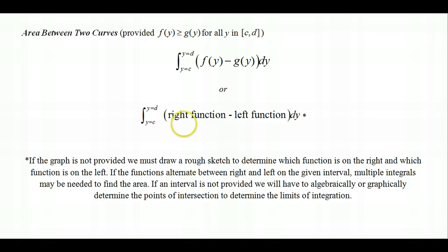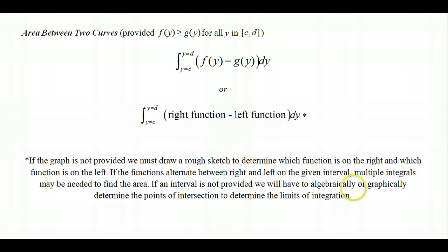We'll be seeing many functions that don't pass the vertical line test because they're functions of y, not functions of x. Just as in the previous lesson with respect to x, we may need to draw the graph, figure out whether functions alternate between right and left on the interval — otherwise multiple integrals will be needed — and if an interval is not provided, use algebra or a graphing calculator to find the points of intersection to determine the limits of integration.